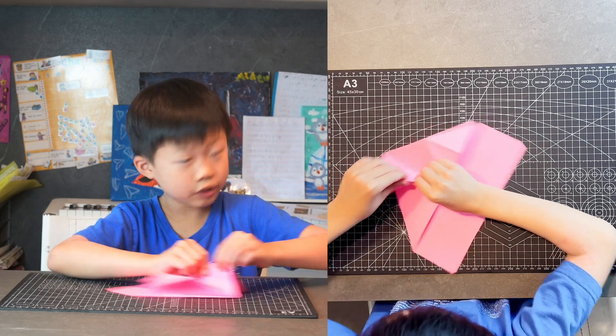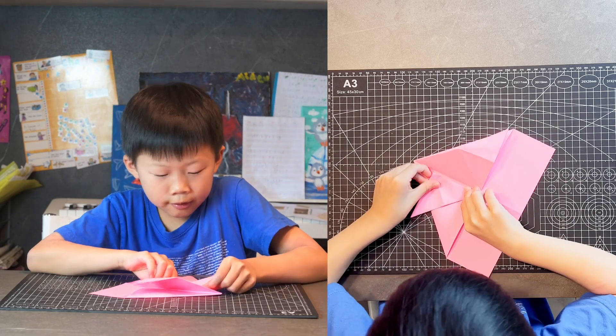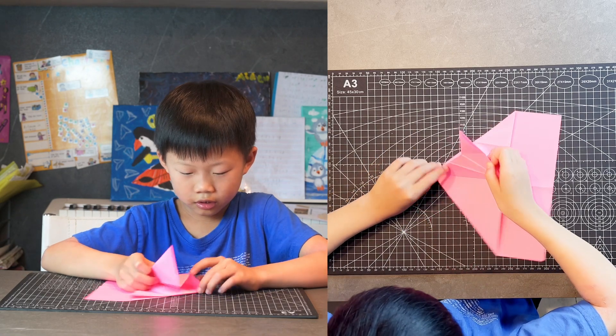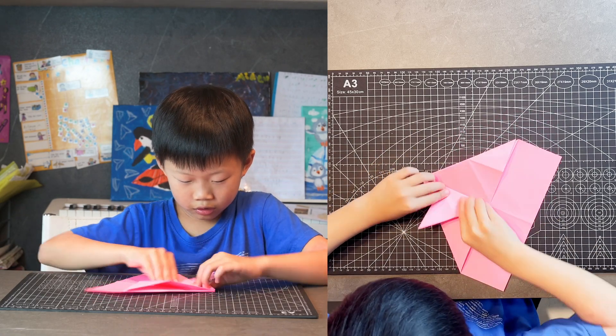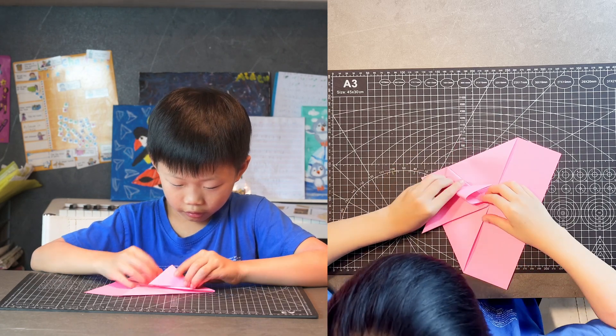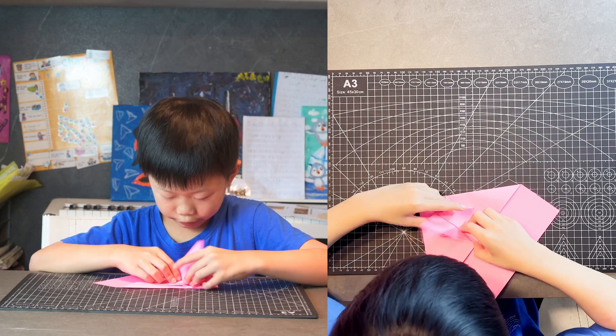Now fold it on the two existing creases and then fold it on the other side and then fold it on the two existing creases.